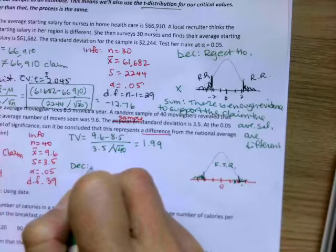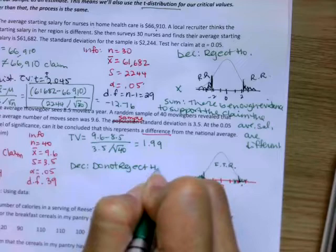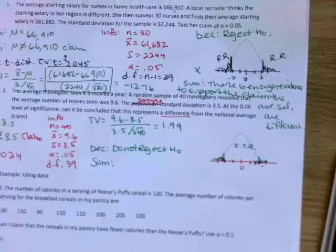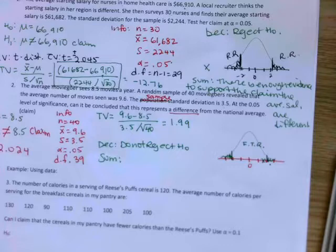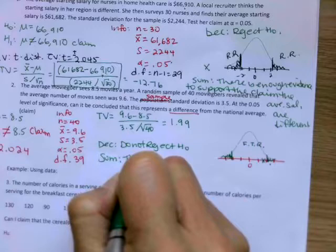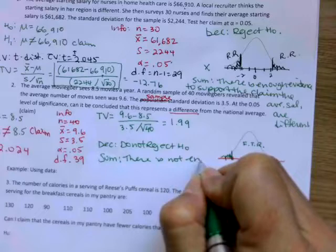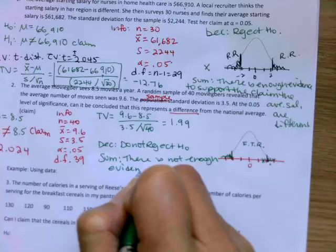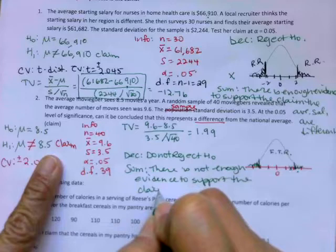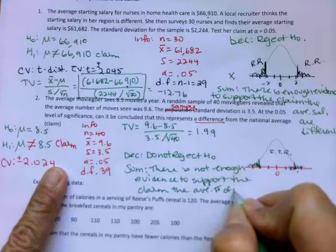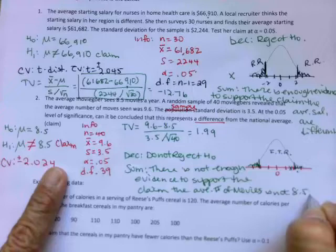So our decision will be do not reject H naught. So when you don't reject the null hypothesis, it's possible you're making a mistake. This is that type two error. It's possible we're making one. We don't have a way to estimate how large of a chance it is that we're making that mistake. So what we do is we say there's not enough evidence. We're not going to be very definitive here. There is not enough evidence. So we're not going to reject the null hypothesis. So we don't have enough evidence to support the claim that the average number of movies is not eight and a half.